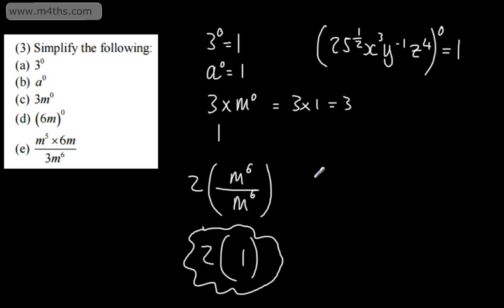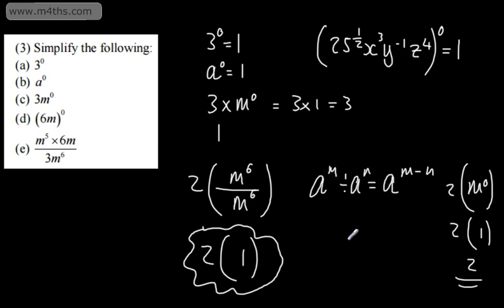What we could have used though is A to the M divided by A to the N is equal to A to the M minus N. So what we'd have is 6 minus 6, so we'd end up now with 2, and then we'd have M to the 0, which of course is 2 times by 1, which is going to give us 2.